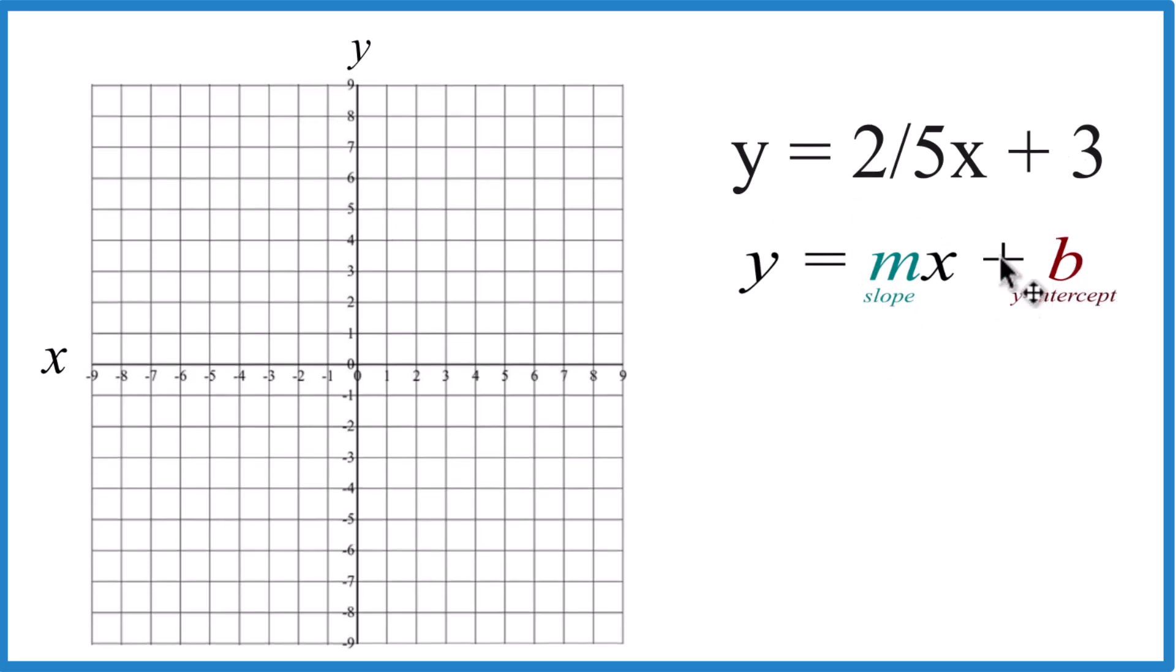So we have our y-intercept, that's three. So we're just going to come up here to three on the y-axis. This is where we'll cross the y-axis.